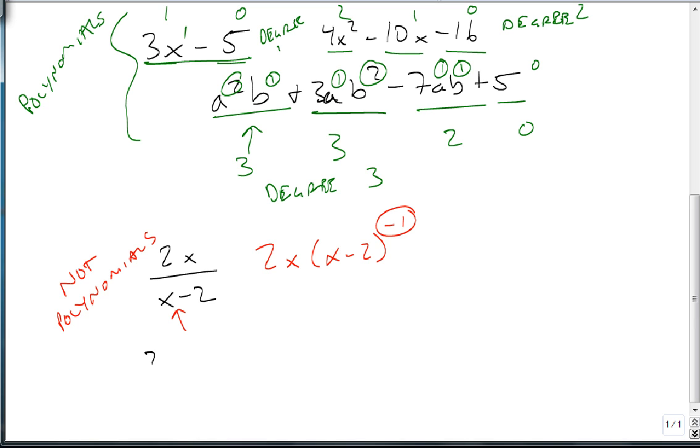Likewise, if I had 3x to the 3/4 plus 5, notice that degree is a fraction, so this is not a polynomial because of the fraction. So if you have variables in the denominator or something that's not a whole number, it's not a polynomial.